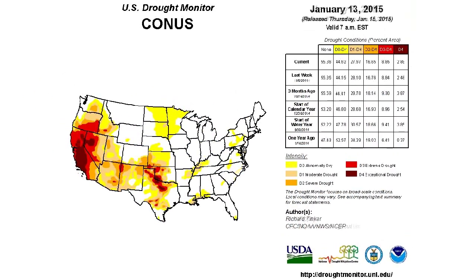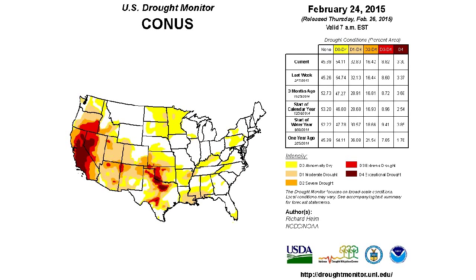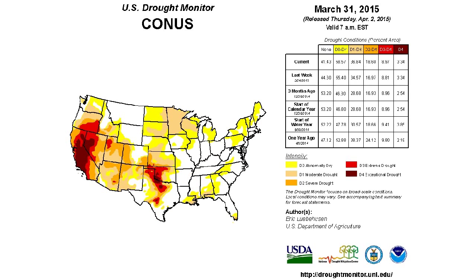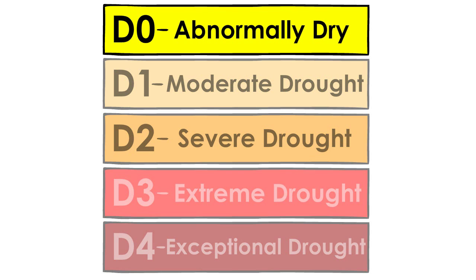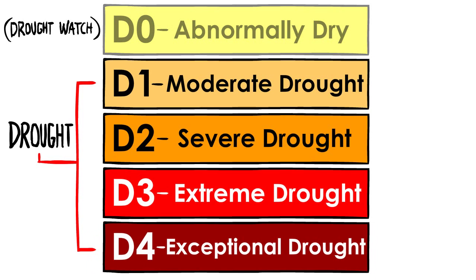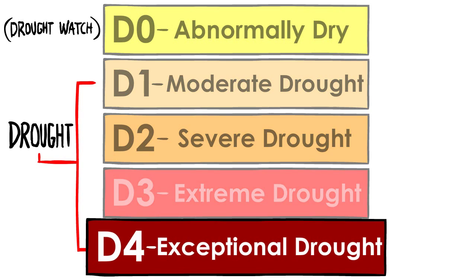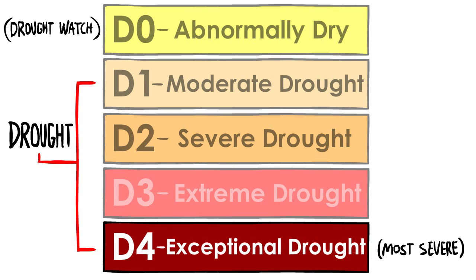These maps have been produced every week since 1999, striving to accurately depict drought severity over the entire country. In this animation, we will break down the categories, which includes D0 representing drought watch, and ranges from D1 to D4, with D4 being the most severe.